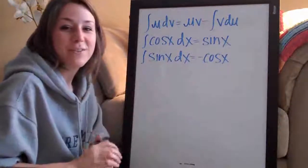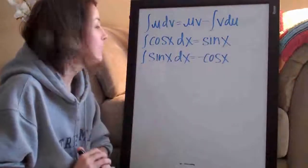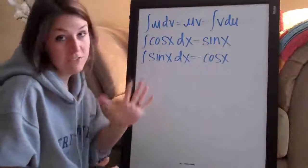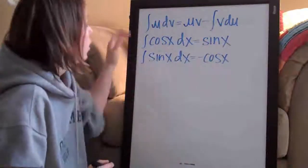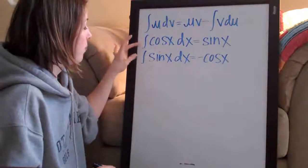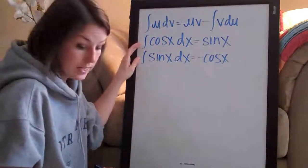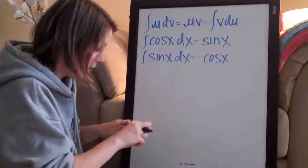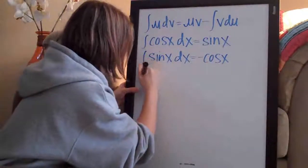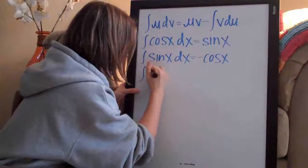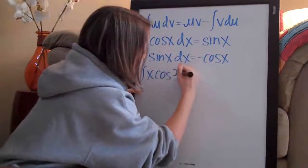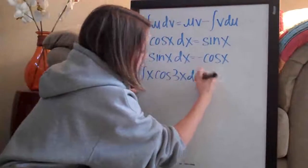Hi everybody! Welcome back. We've got another integration by parts problem. To save time, because these problems are really long, I've written the integration by parts formula on the board as well as two formulas which we're going to need. The problem we're going to do this time is the integral of x cosine of 3x dx.